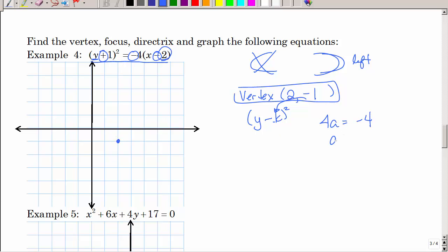4a is negative 4, so a is negative 1, and that tells me to go left. The y squared tells me to go left to right, this negative tells me to go left. So that's my vertex, that's my focus, which means my directrix is in the other direction. Right there, I can tell that my directrix is x equals 3.